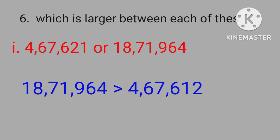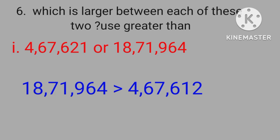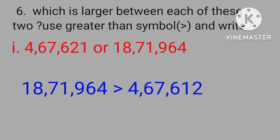Look at the sixth bit — which is larger between each of these two? Use the greater than symbol and write. First one: four lakhs sixty-seven thousand six hundred twenty-one, or eighteen lakhs seventy-one thousand nine hundred sixty-four. The answer: eighteen lakhs seventy-one thousand nine hundred sixty-four is greater than four lakhs sixty-seven thousand six hundred and twelve.